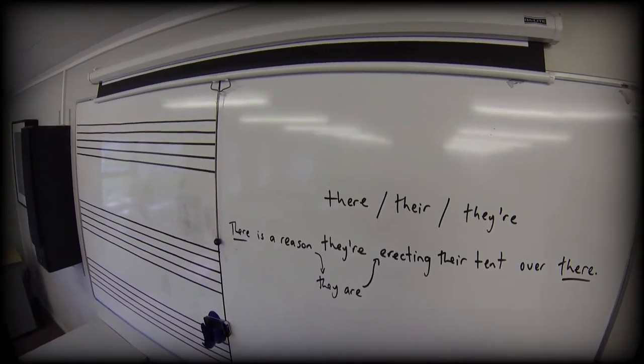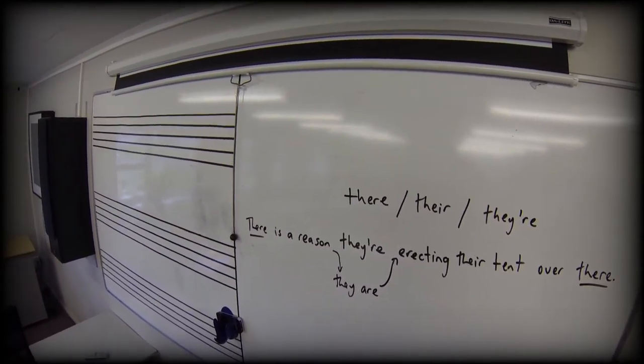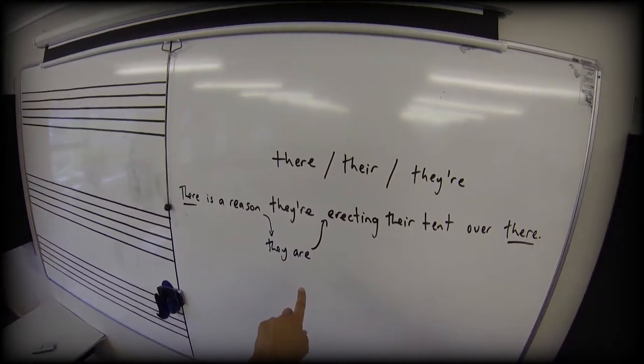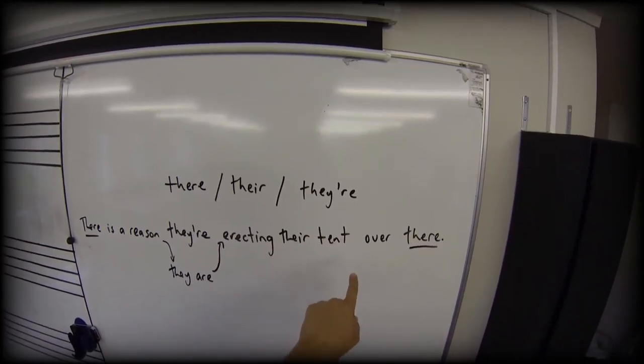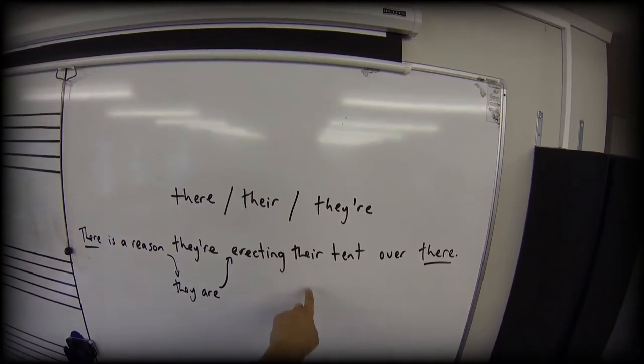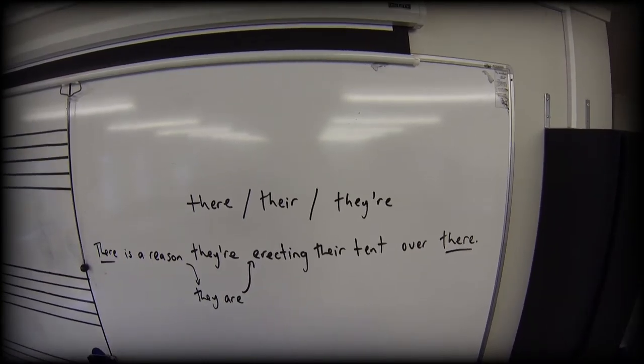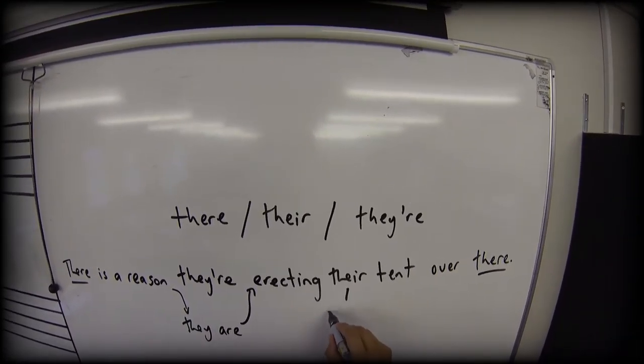If this had been a story about one woman erecting a tent, I would say there is a reason she is erecting her tent. So their is just the possessive pronoun that we use for a group of people. So this here is a possessive.